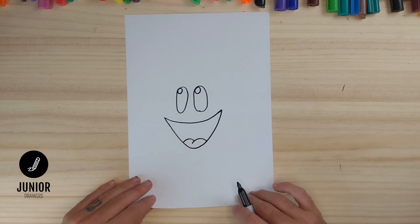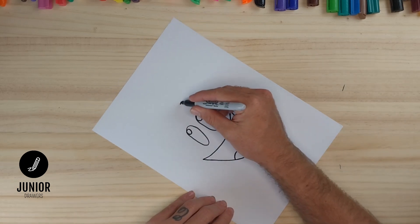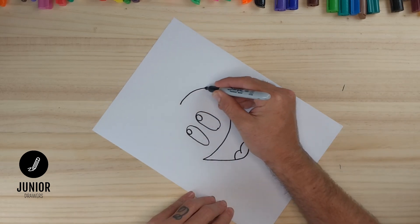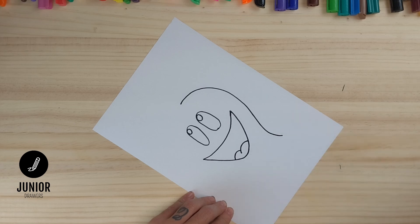Now it's time to draw the outline of the ghost. So we'll start in the middle and draw a curved line down this side. And as we get to the bottom, we'll just flick that line out like that.